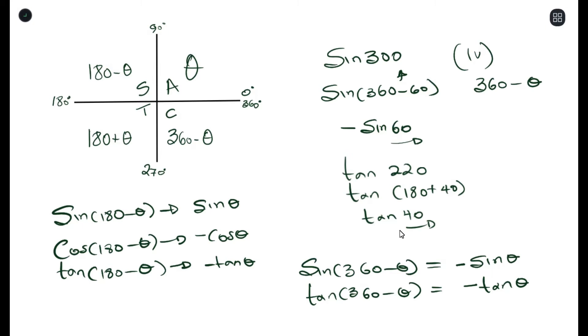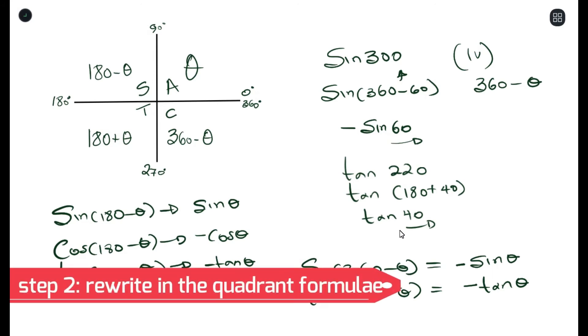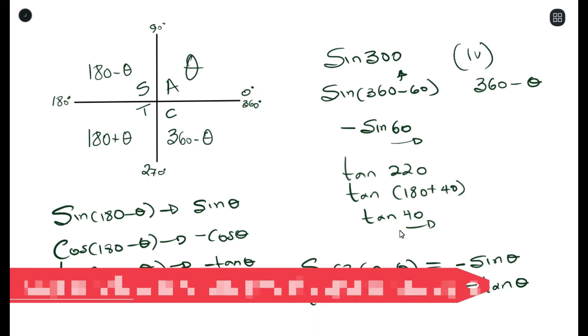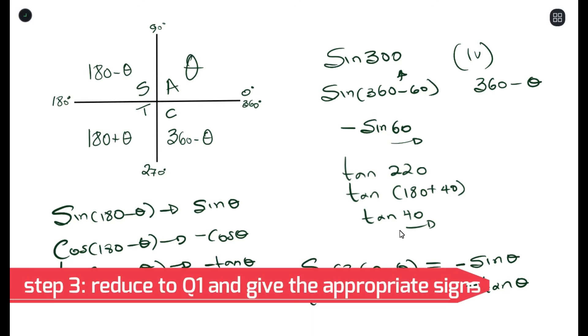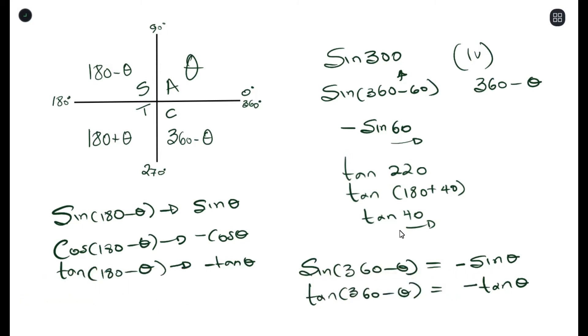That's the concept of reduction. Whenever you want to reduce an angle, the first step is to determine which quadrant it is in. The second step is to rewrite the value using the equation of that quadrant. The third step is to assign a sign — is it positive or negative? Then bring it back to the first quadrant. Now let's try an example where you use the reduction formula to simplify a full expression.